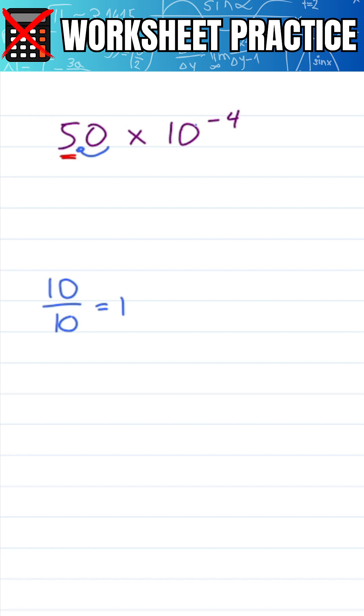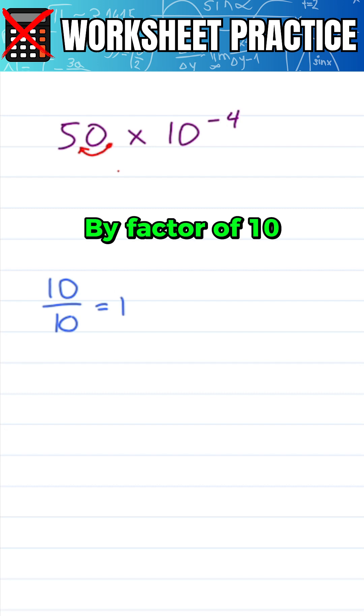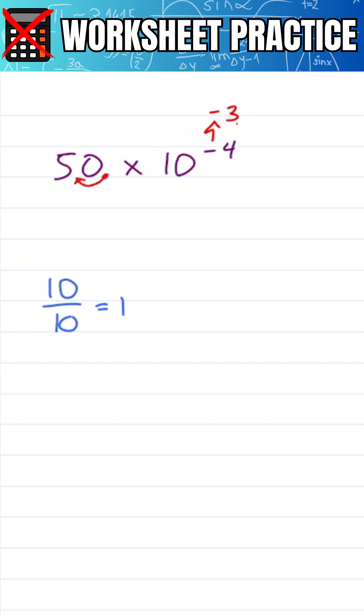But wait a minute, what decimal do we move over here? We're looking at the power. If 50 is made smaller by a factor of 10, minus 4 has to be made bigger by a factor of 10, which means we move it up to minus 3, giving me a proper scientific notation of 5 times 10 to the minus 3.